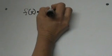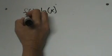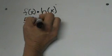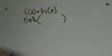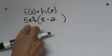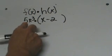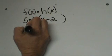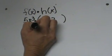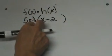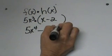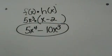Let's look at this first simple one: f of x times h of x. So f of x is 5x cubed and we are going to multiply that times h of x, which is x minus 2. Since this is just a monomial times a binomial, all we have to do is distribute. So 5x cubed times x is 5x to the fourth, minus 5x cubed times 2, which is 10x cubed.